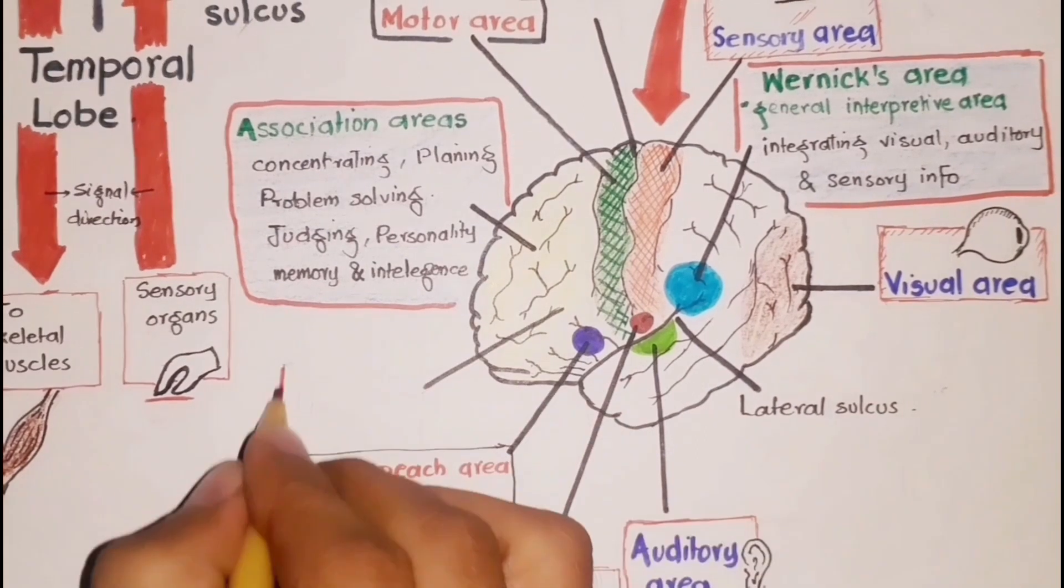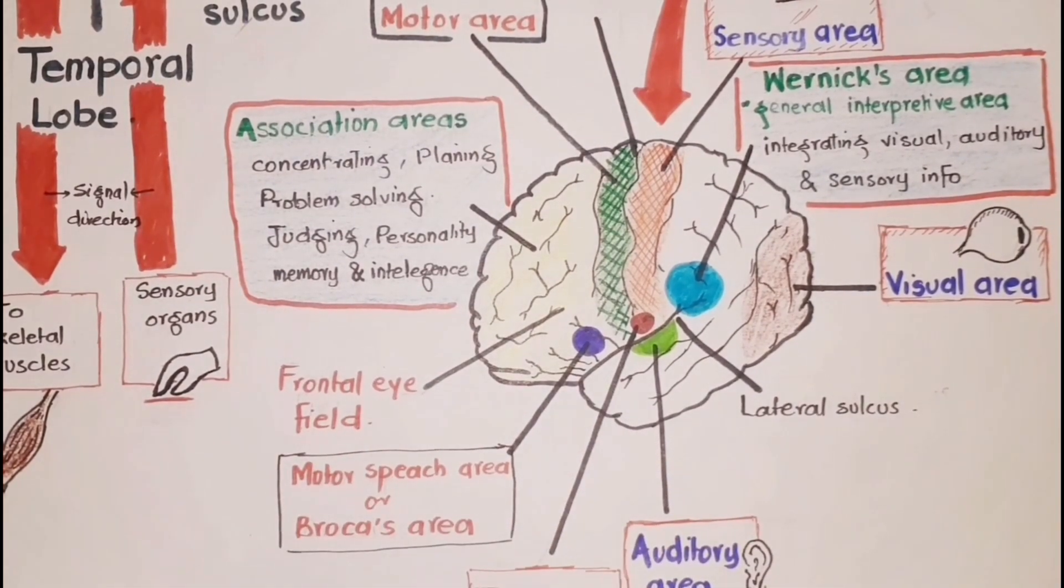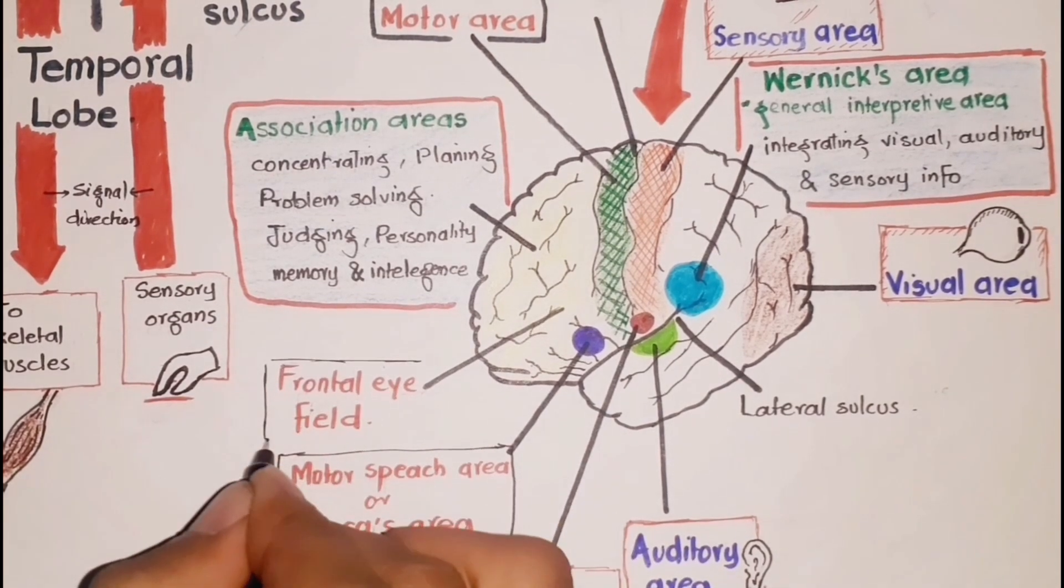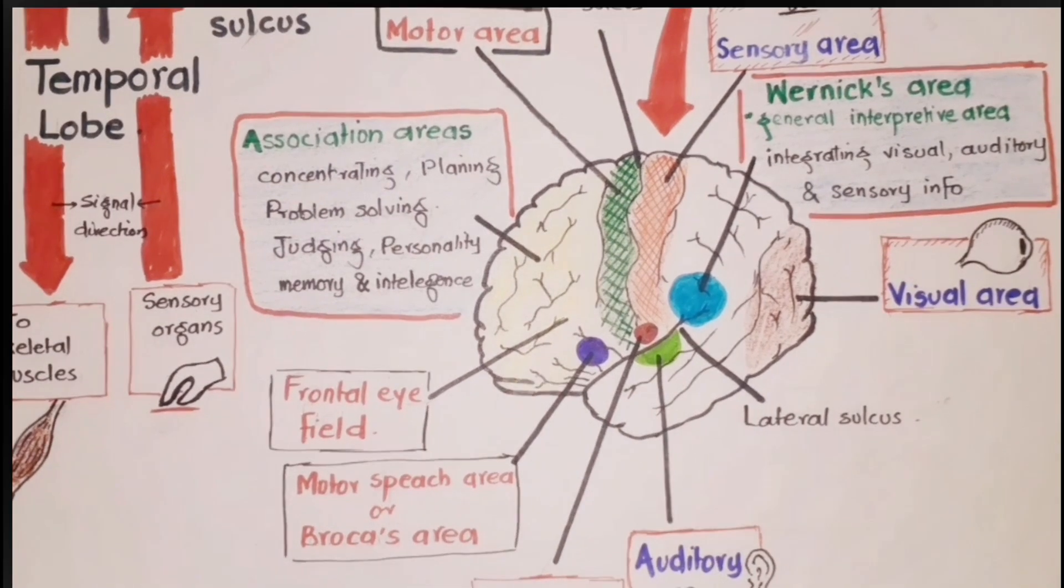Above the motor speech area is a region called the frontal eye field. The motor cortex in this area controls voluntary movements of the eyes and eyelids. Another region just in front of the primary motor area controls the muscular movements of the hands and fingers. It is a region of the frontal lobes that makes skills such as writing possible.